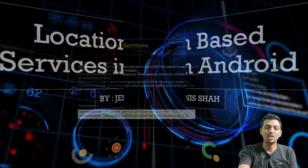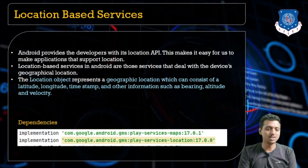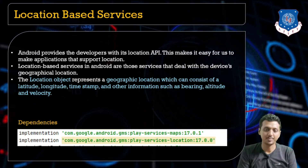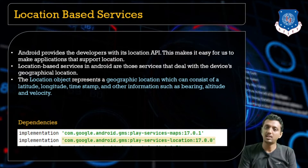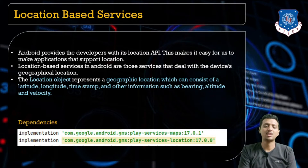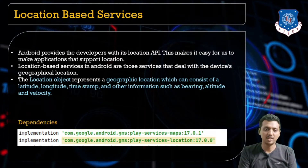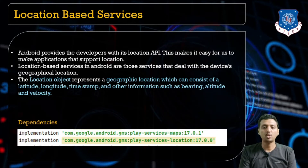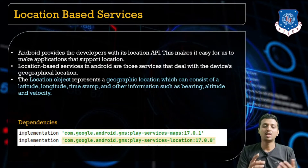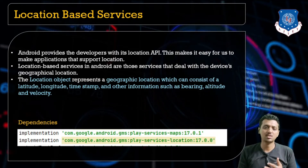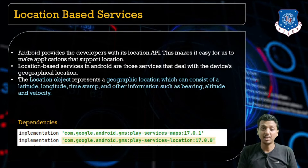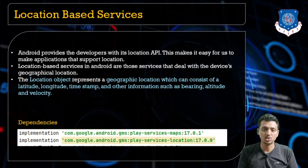Let's begin with understanding location-based services. Android provides the developer with a location API. With this API we can easily track our location and implement location classes like LocationListener, receiver, marker, and more. Using such location classes we can implement various methods like fetching data about the nearest restaurants or hotels, viewing the current location, or developing an application to track your current location.